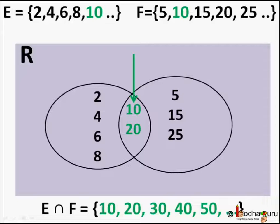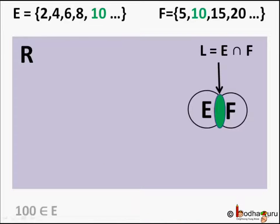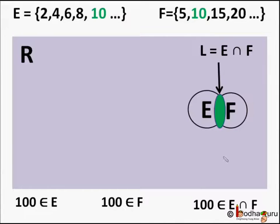So let's see what kind of whole number is there at intersection of E and F. Is 100 there? We know 100 is an even number. It means it belongs to set E. And 100 is also a multiple of 5. 20 into 5 is equal to 100. So it belongs to set F also. So 100 will be part of intersection of E and F.